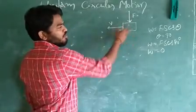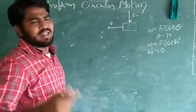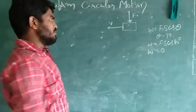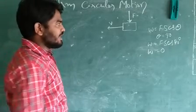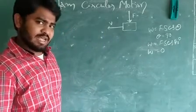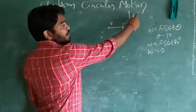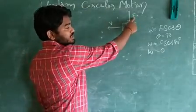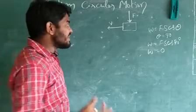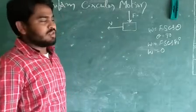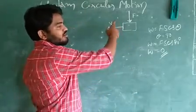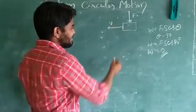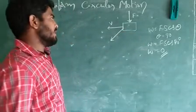Imagine a football moving with uniform velocity in a straight line. You come and kick the ball in a perpendicular direction — what will happen? Definitely it will change its direction. The applied force is useful to change the direction. But since the force is perpendicular, it is unable to change the magnitude of the velocity. As the work done is zero, it cannot create any change in the magnitude of velocity, but it can change the direction of velocity.